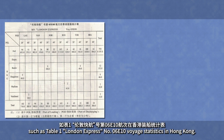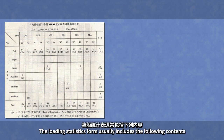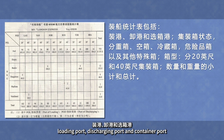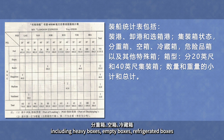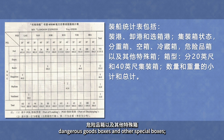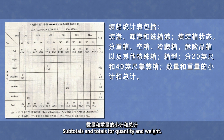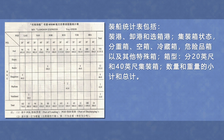第二部分为装船统计表，如表一，伦敦快航号第06E10航次，在香港装船统计表。装船统计表通常包括下列内容：装港、卸港和选箱港；集装箱状态分重箱、空箱、冷藏箱、危险品箱以及其他特殊箱；箱型分20英尺和40英尺集装箱；数量和重量的小计和总计。